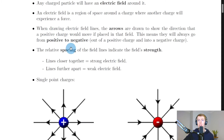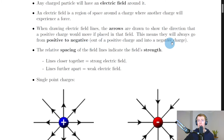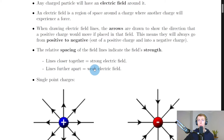When drawing electric field lines, the arrows show the direction that a positive charge would move if placed in that field. This means they always go from positive to negative — out of a positive charge and into a negative charge. The relative spacing of the field lines also indicates field strength: closer lines mean a strong electric field, further apart means a weak electric field.